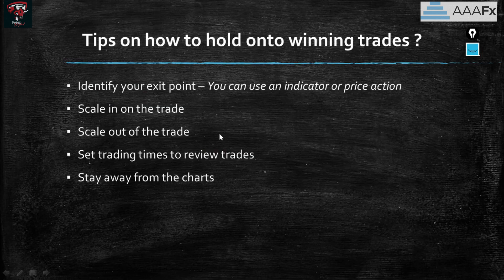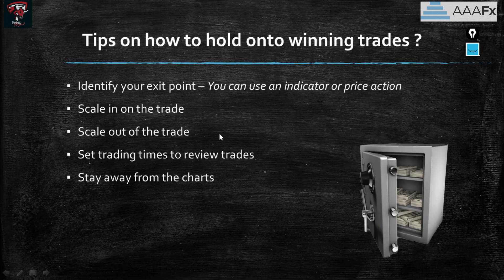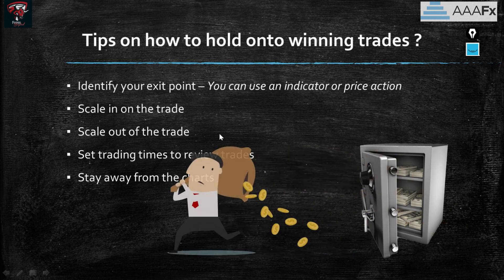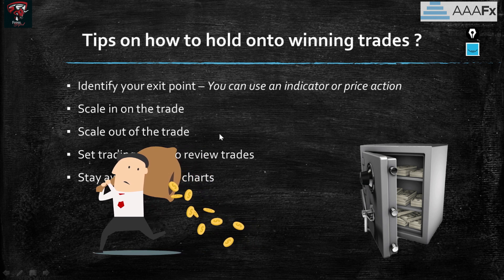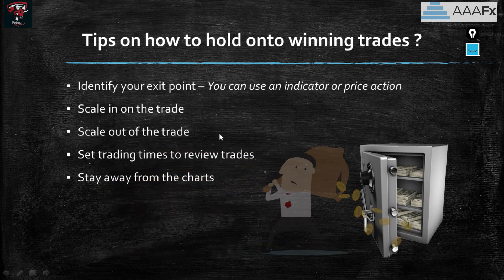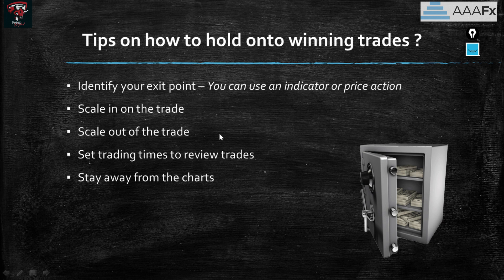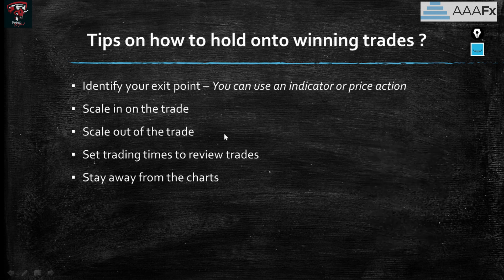Scaling out is when you have a bigger position running with large profits but want to hold until a specific level. You decrease the amount of the running trade by closing half and leaving the remaining half in your running position until it hits the final exit level.